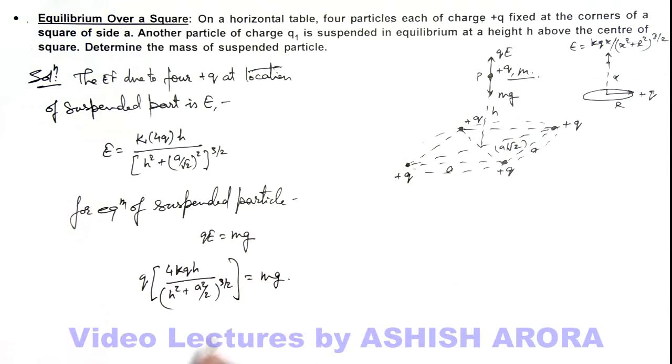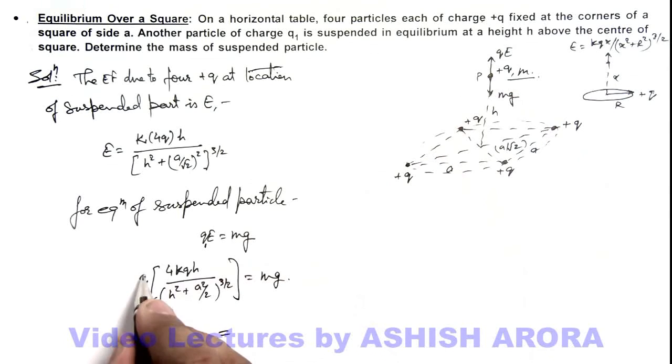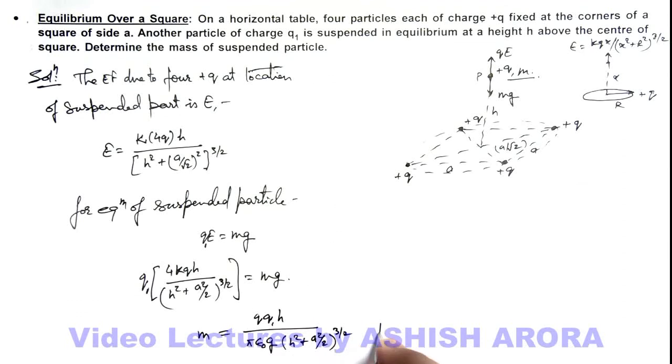If we simplify this relation we get the value of mass m which is equal to, here k we can write as 4 pi epsilon not, this 4 gets cancelled out. And here this is q1 because the charge is q1, so here we can write it as q q1 h divided by pi epsilon not g, multiplied by h square plus a square by 2 to power 3 by 2. That will be the answer for this problem.